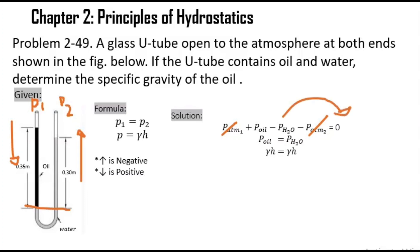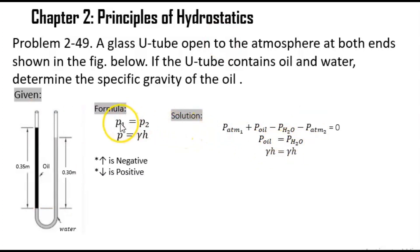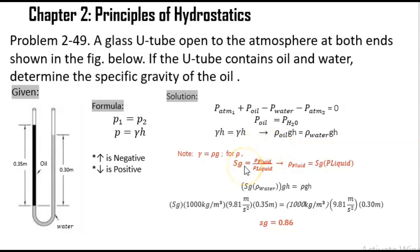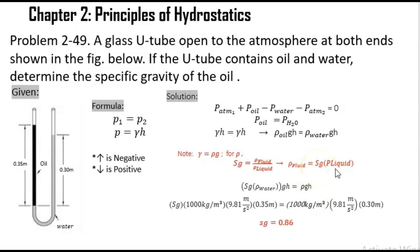Transposing, we have P_oil equals P_water, which is the same as P1 equals P2. We know that the formula for pressure is specific weight times height, and since specific weight equals density times gravity, we get: density of oil times gravity times height equals density of water times gravity times height. To solve for density of oil, we use the formula for specific gravity: Sg equals density of fluid over density of liquid, where fluid is oil and liquid is water. Cross-multiplying gives density of oil equals Sg times density of water.